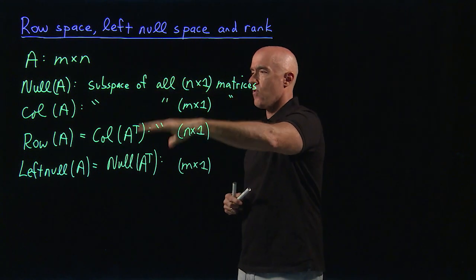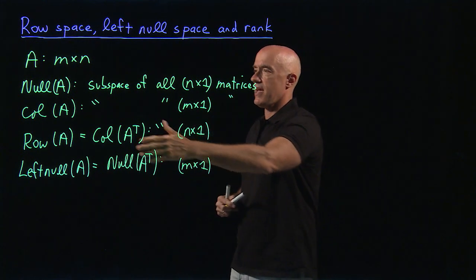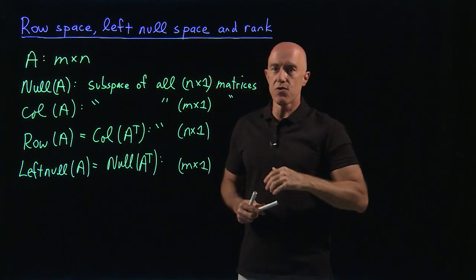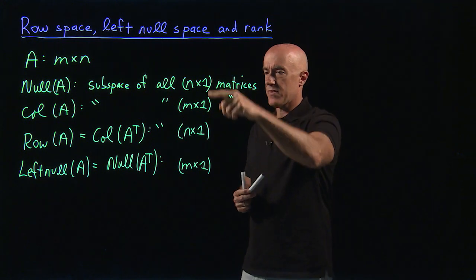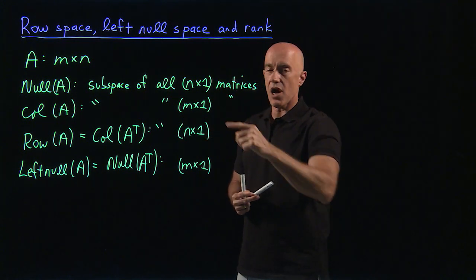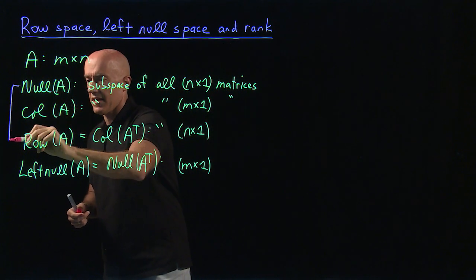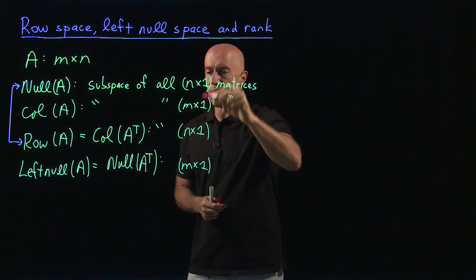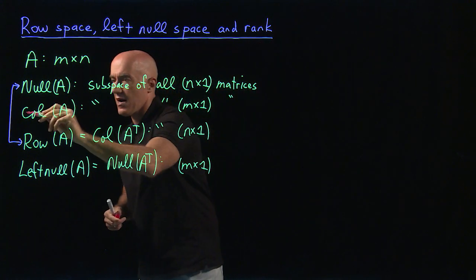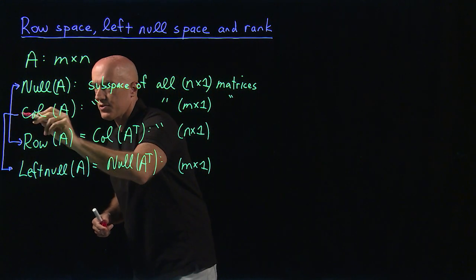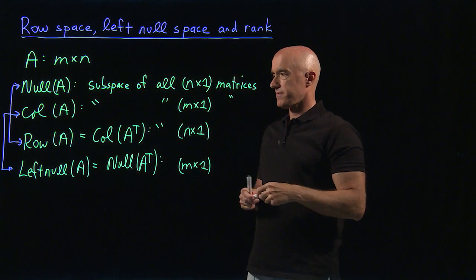So we have these four fundamental subspaces of a matrix. Two of them are associated with matrix A, and two with the transpose matrix. The null space of A and the row space of A are both subspaces of N by 1 matrices, while the column space and the left null space are both subspaces of M by 1 matrices.